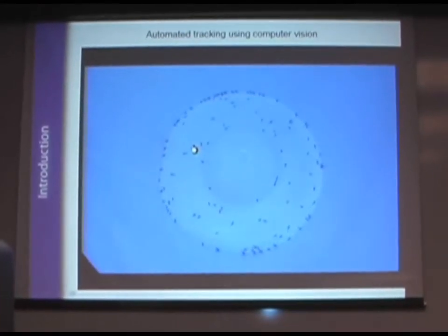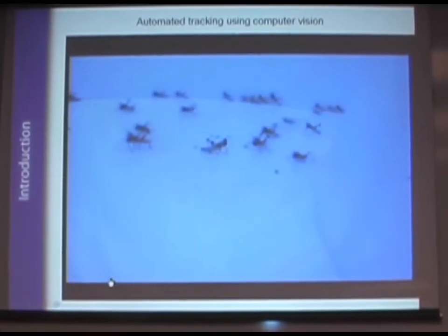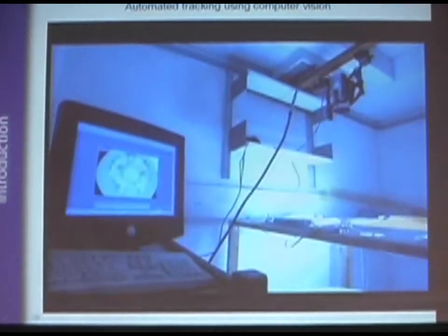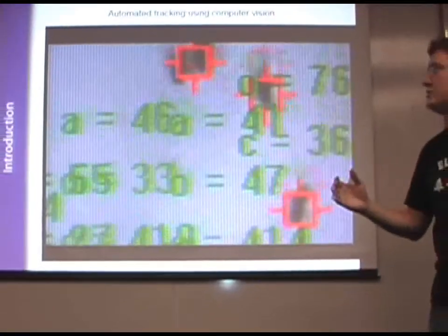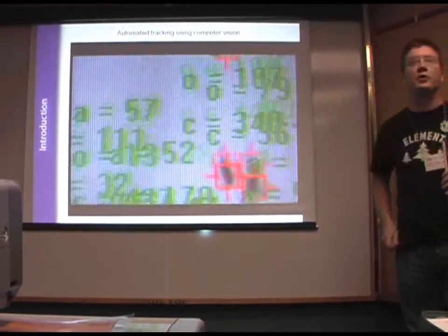So one way that we're beginning to address this topic is by developing computer vision techniques. These are locusts, hoppers in the lab in Oxford, being filmed from above. And here's some software I've written that can track the motion of all the individuals simultaneously, recording the angles that they're moving at, their distance to nearest neighbors, who they're interacting with, and so on.